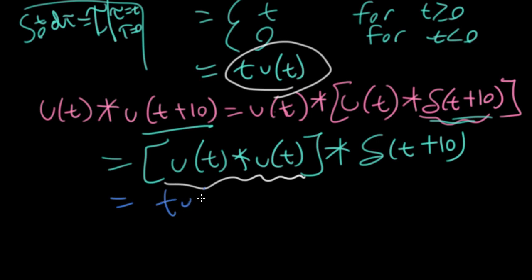And now we just showed that u(t) convolved with u(t) is the same as this guy here. So I could write this as t u(t) convolved with delta(t+10). And this is then equal, what does it do? It shifts.